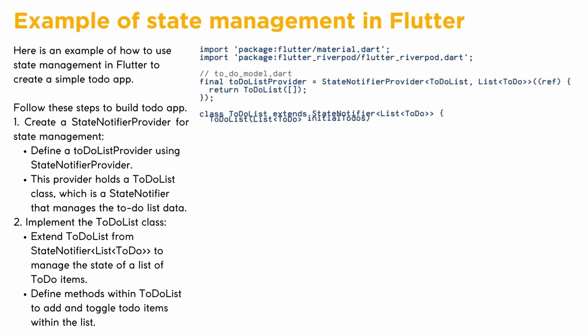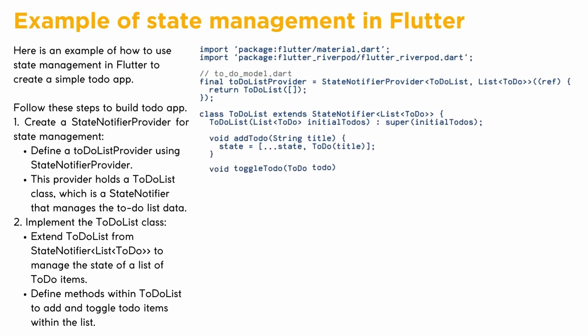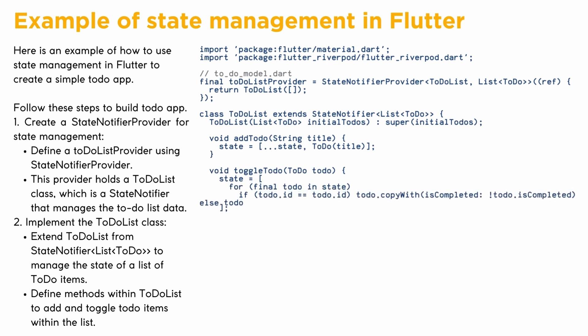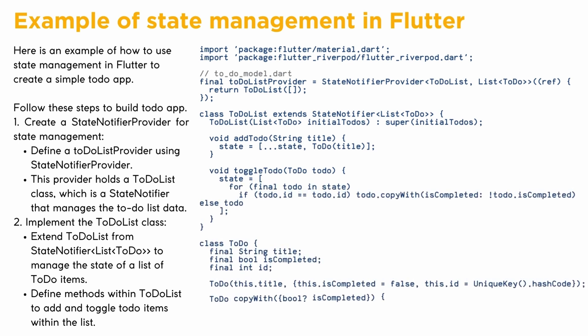Example of state management in Flutter. Here is an example of how to use state management in Flutter to create a simple to-do app. Follow these steps: Step 1 — create a StateNotifierProvider for state management. Define a to-do list provider using StateNotifierProvider. This provider holds a ToDoList class, which is a StateNotifier that manages the to-do list data.